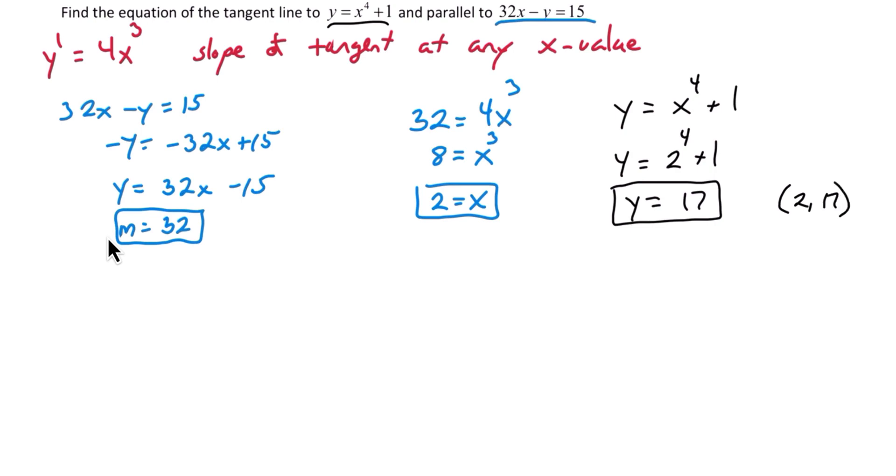We're looking for the line that has a slope of 32 and it goes through the point of tangency, which is 2, 17. So we'll go to the point slope formula. y minus y1 equals m times x minus x1. y minus 17 is equal to 32 times x minus 2. Distributing, we get 32x minus 64. Then adding 17, we get y equals 32x minus 47.